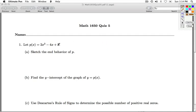Hi folks, this is College Algebra Quiz 5. Number 1, we're given a polynomial P of x. We're asked to sketch the end behavior of the polynomial P, and the end behavior is determined by the leading term, the term with the highest power of x in it.